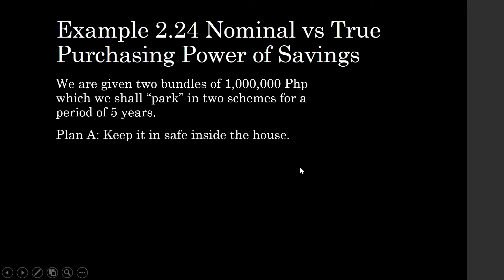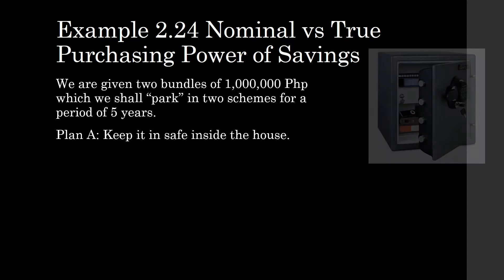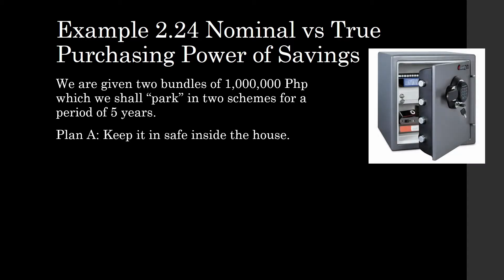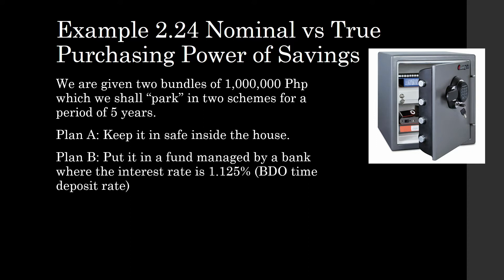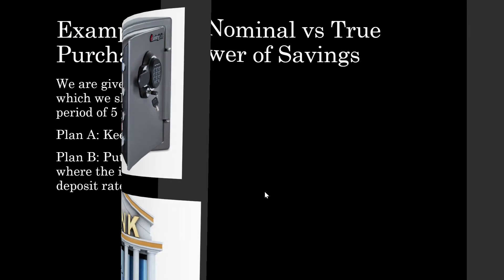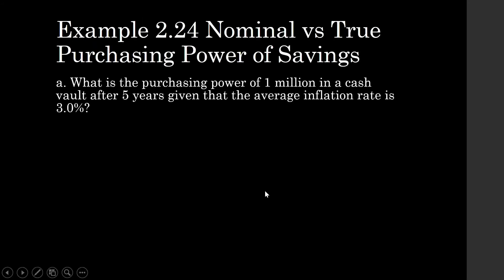In Plan A, all we have to do is put our money in a safe deposit inside our house — just keep it there and lock it for five years. Plan B is to put it in a fund managed by a bank where the interest rate is 1.125% a year, which is the prevailing time deposit rate found on the BDO website. Let us compare the two: what is the purchasing power of 1 million pesos in a cash vault after five years, given that the average inflation rate is 3%?